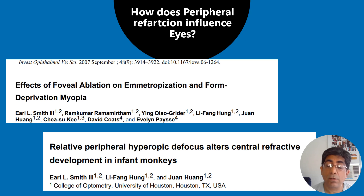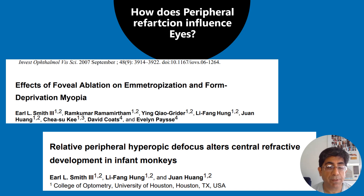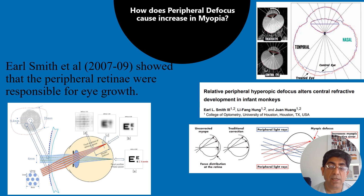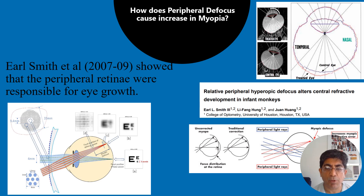The whole story started from the landmark work of Dr. Earl Smith III, who did foveal ablation on emmetropic macaque monkeys and found that it is actually the peripheral retina which is responsible for the axial elongation of the eye. He published follow-up articles in 2007, 2009, and 2010. What he was showing was that because of the relative peripheral hyperopia seen in this picture, the eyeball tries to catch up to that point and thereby increases in size. The treatment is myopic defocus, whereas peripheral hyperopic defocus alters central refractive development in infant monkeys.